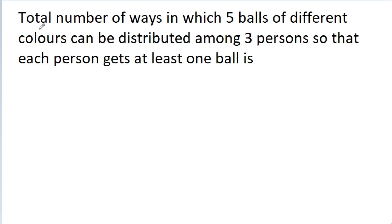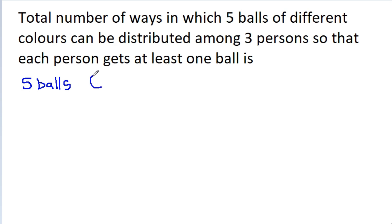In this video, we have to find the total number of ways in which 5 balls of different colors can be distributed among 3 persons so that each person gets at least 1 ball. So we have 5 balls and 3 persons.